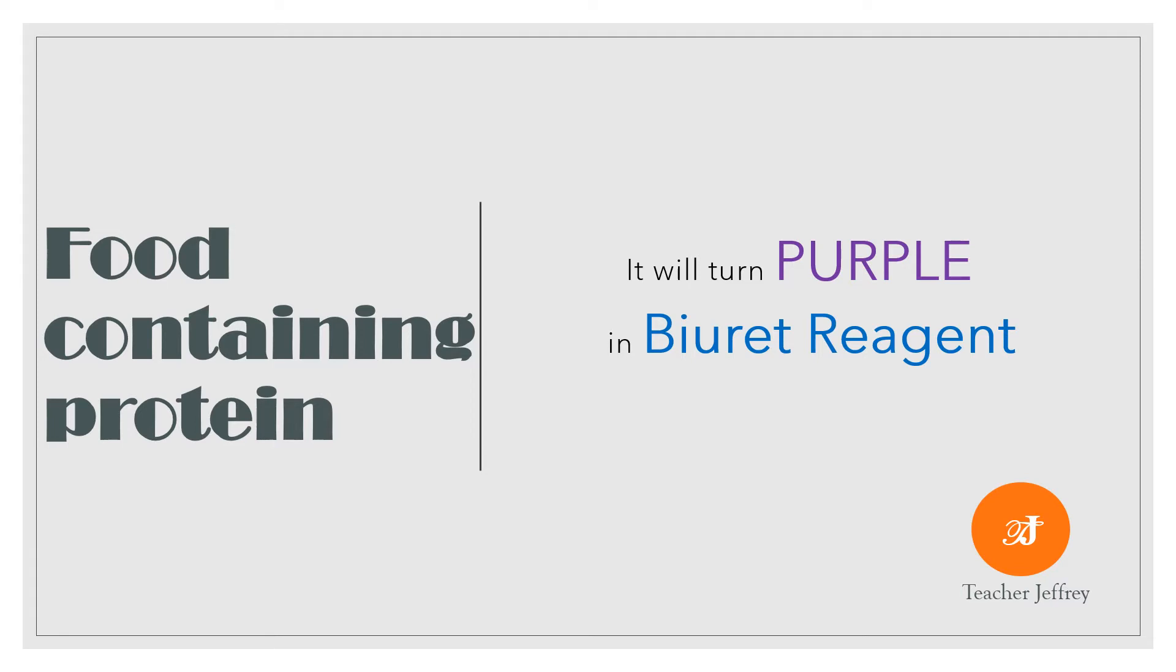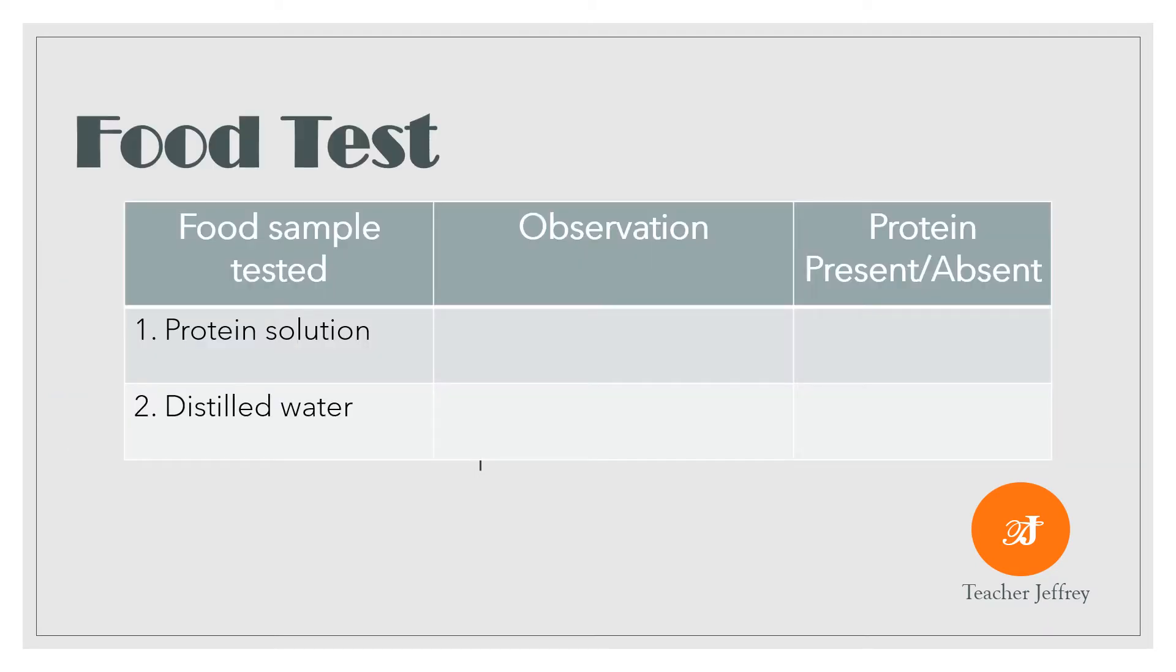Food containing protein will turn purple in Biuret reagent. Let us use this table to check if food containing protein like protein solution turns purple, and for food without protein like distilled water reveals no observable change in Biuret solution.